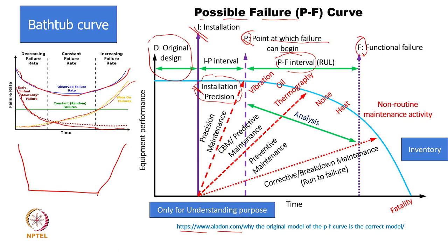After functional failure, if it happens at component level, we can perform breakdown maintenance or corrective maintenance — replacing a failed bearing, gear, clutch, or brake. The system will be on halt for some time: maybe a few hours, days, or months, depending on whether the component is available in inventory. Many companies keep large inventories: if a bearing fails, in half an hour the system can be back up. This is corrective or breakdown maintenance — sometimes called 'run to failure.'